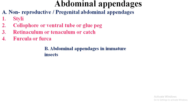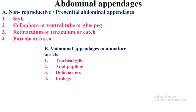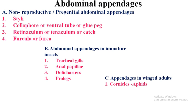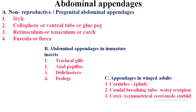Abdominal appendages in immature insects — larvae or nymphs — include: first, tracheal gills; second, anal papillae; third, dolly casters; fourth, prolegs. For winged adults, the appendages include: first, cornicles as in aphids; second, the caudal breathing tube as in the water scorpion; then cerci, which are asymmetrical in male embeds; and the median caudal filament in the silverfish.